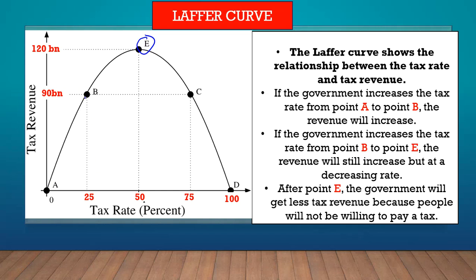If the government increases the tax rate to 25% — to point B — they will get 90 billion. Now, if the government decides to increase tax even further to 50% — to point E — people will still pay tax, and the revenue will still increase, even though it's increasing at a decreasing rate, which means that some people are no longer willing to pay tax. That's why the curve from point B to point E is increasing at a decreasing rate. But once you reach point E, the curve starts going down, meaning tax revenue starts to decrease and the government makes less and less money.